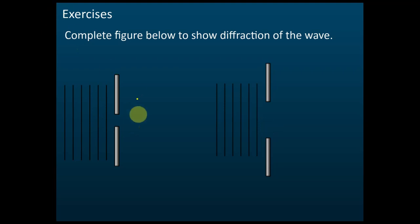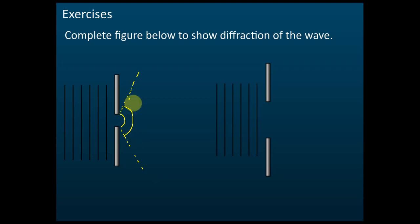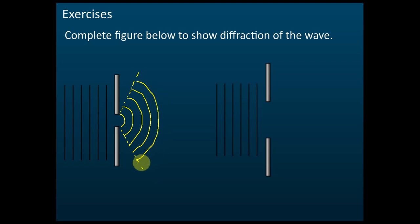Let's draw the guide first. This one will spread to a very wide angle, so let's draw the guide. After that, we draw a curve. This is the diffracted wave. You must check the size of the opening and compare it to the wavelength. If they are more or less the same, then it is a curve.